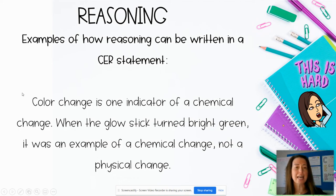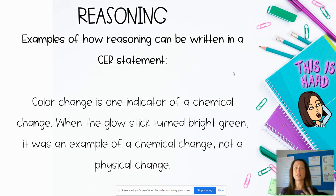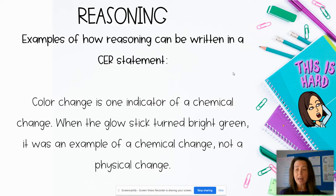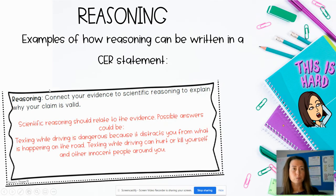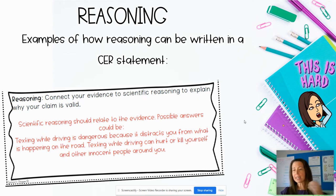An example of how a reasoning statement could be written: color change is one indicator of a chemical change; when the glow stick turned bright green, it was an example of a chemical change, not a physical change. Students could add that a physical change is when an object changes in size or shape. For the texting and driving example, reasoning could be: texting while driving is dangerous because it distracts you from what is happening on the road and can hurt or kill yourself and other innocent people.